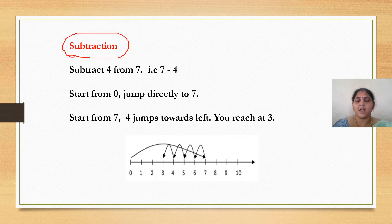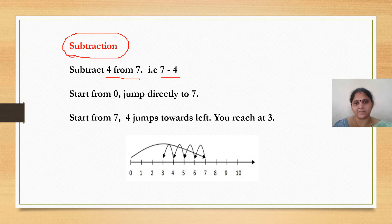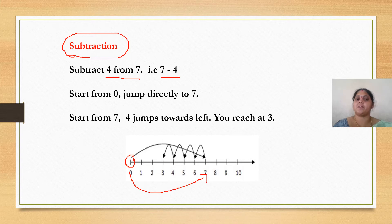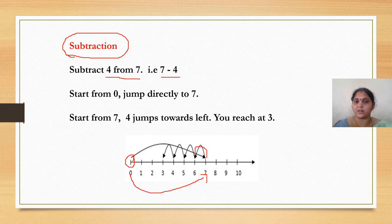How to do subtraction on the number line: I have taken 2 numbers, that is 7 minus 4. We take the larger number first. Start from 0 and jump directly to 7. Now, from 7 take 4 jumps towards the left — left means backwards: 1, 2, 3, 4. You have reached number 3. So, 7 minus 4 is equal to 3. This is how we do subtraction on the number line.